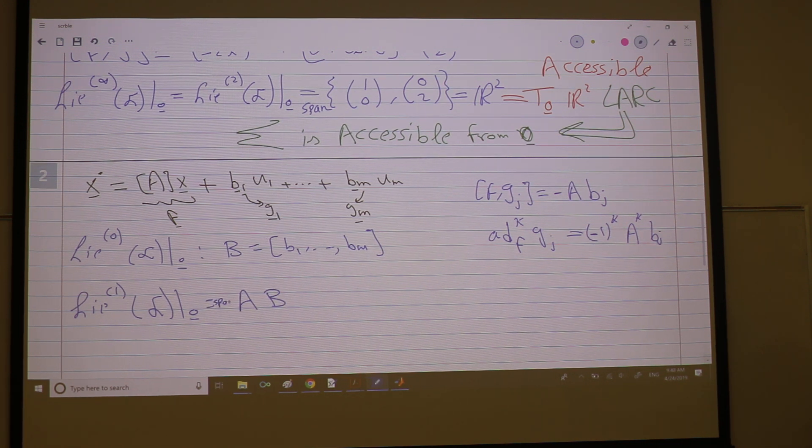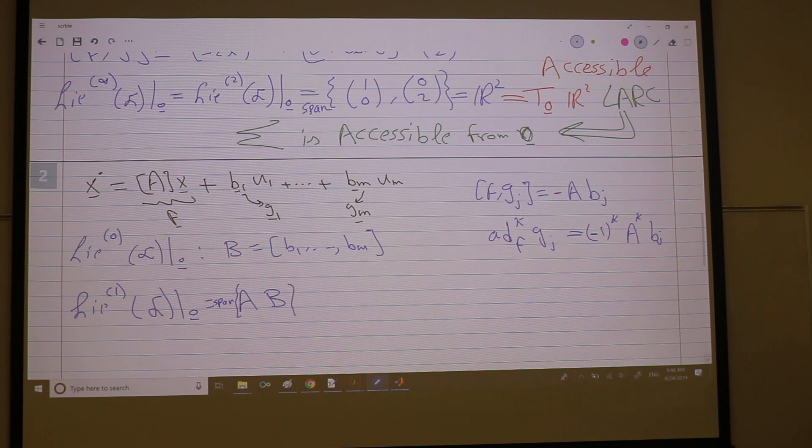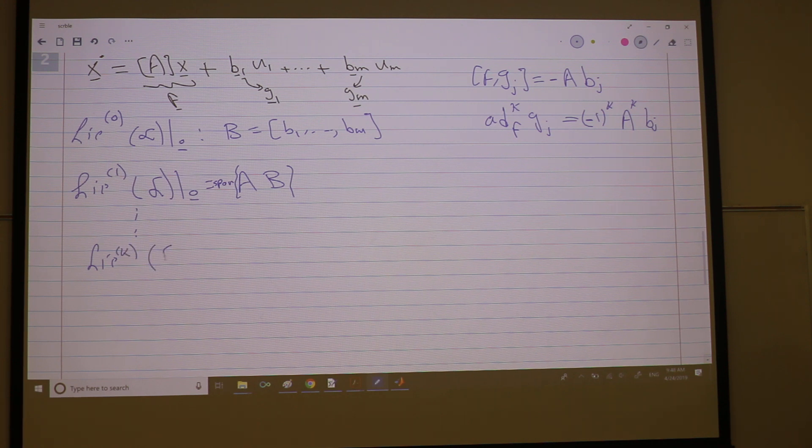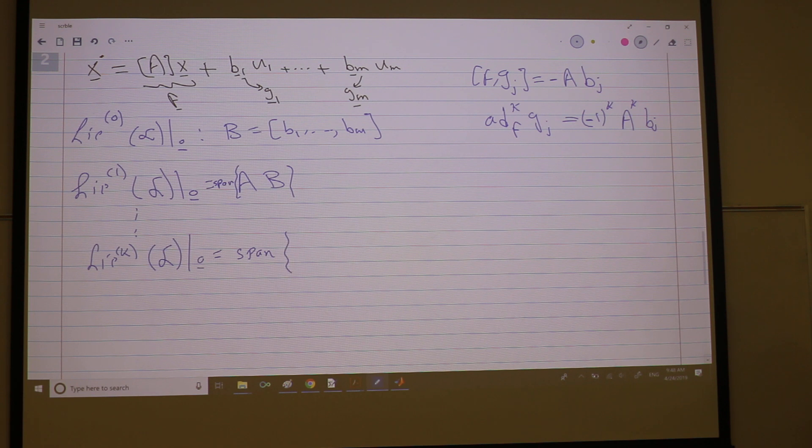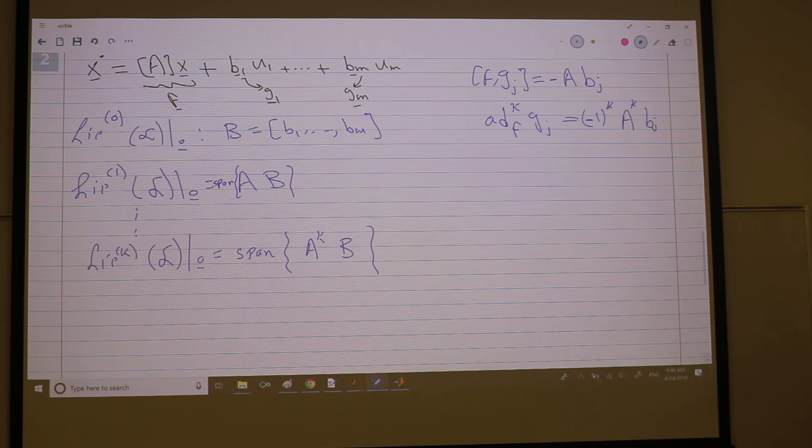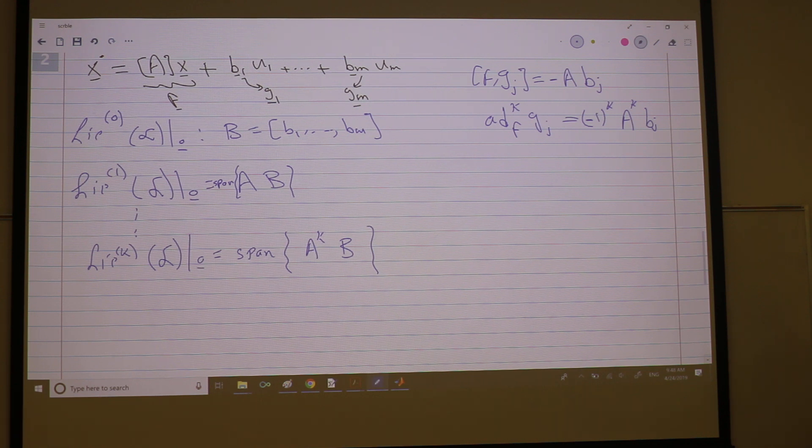And so on. Lie-K of F at zero, this is the span of, as we see from here, it's A to the K times B, correct? Any question about that? When do I stop? When do I stop? Any suggestion?